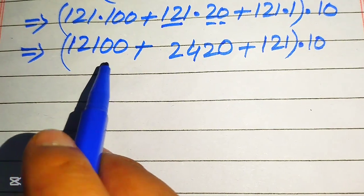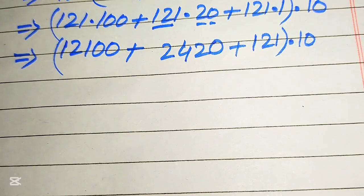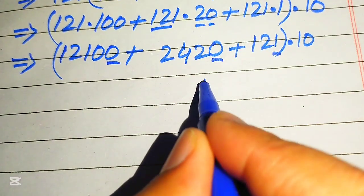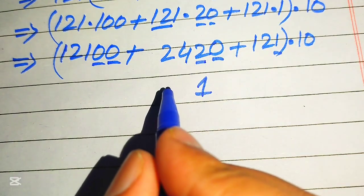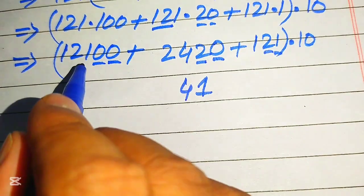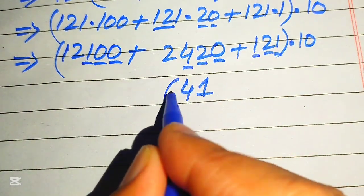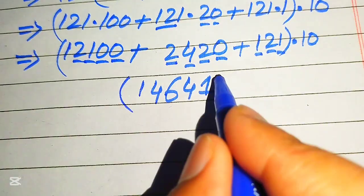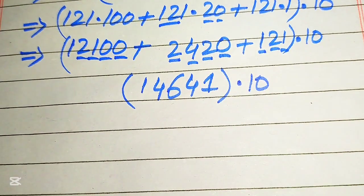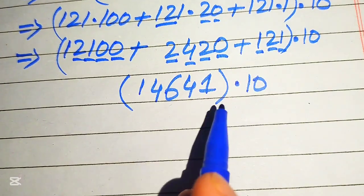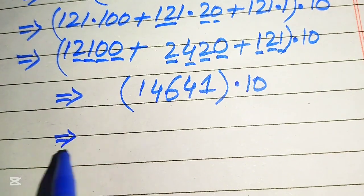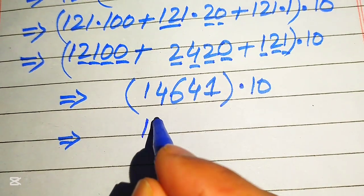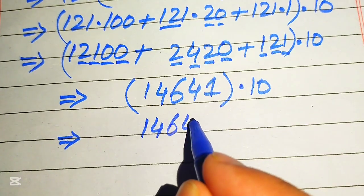In the next step we add these three values directly. Adding the digits: 0 plus 0 plus 1 equals 1; 0 plus 2 equals 2; 2 plus 2 becomes 4; 1 plus 4 is 5; 5 plus 1 is 6; 2 plus 2 becomes 4; and at the last we have 1. So the sum is 14641.